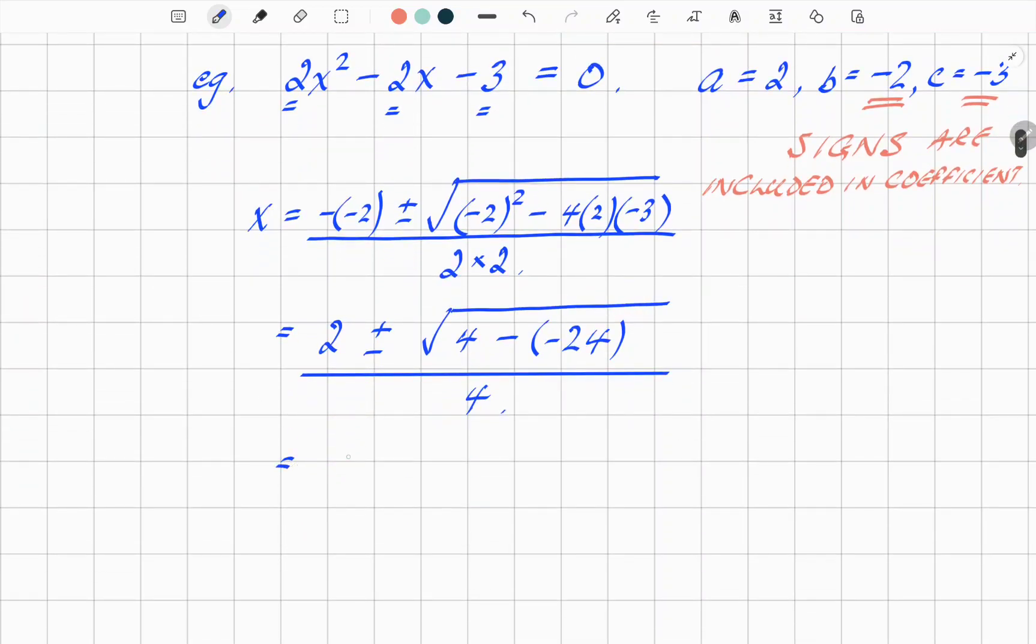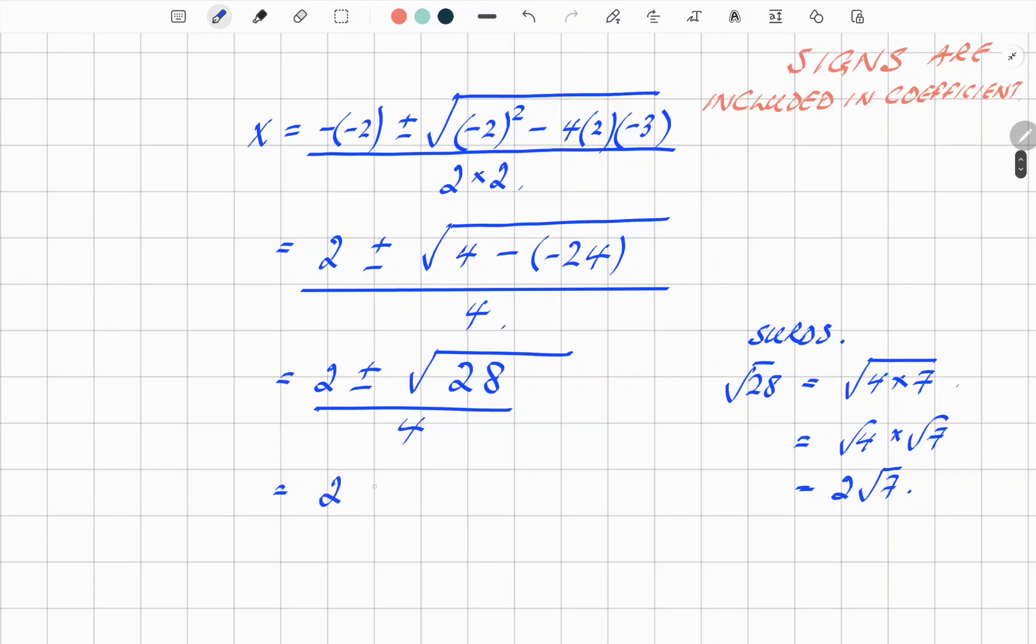So again, one further step of tidying up: 2 plus minus root 28 all over 4. And a little bit of tidying, because root 28 is the same as root 4 times 7, which is root 4 times root 7, so 2 root 7. And so that comes to 2 plus minus 2 root 7 all over 4, and let's see what happens there. We get two solutions, so effectively half plus minus half root 7.